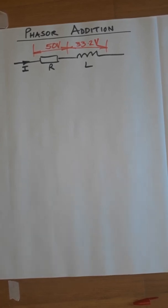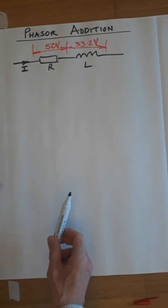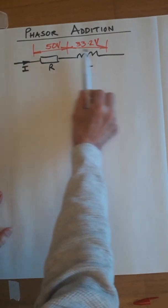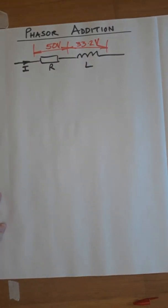This short clip is going to attempt to show you how to produce scaled phasor diagrams. In the example on your handout, we have a series circuit that's 50 volts across the resistor, 33.2 volts across the inductor, and I'm asking you to draw accurately to scale the phasor diagram.